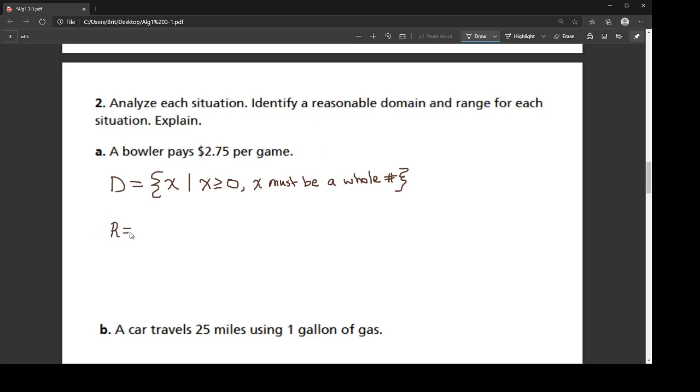Now my range is the amount of money he's paying. So my range is the set of all y values where he's not going to pay a negative amount of money. The bowling alley is not going to give him money to play. So that number that he's paying has to be bigger than zero or equal to zero if he doesn't play any games.